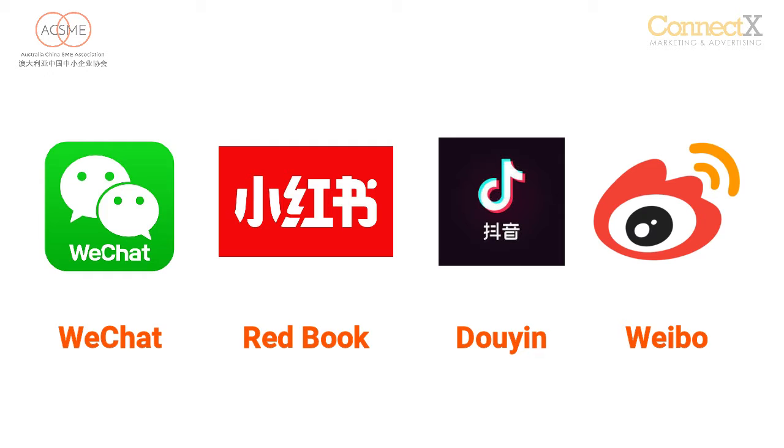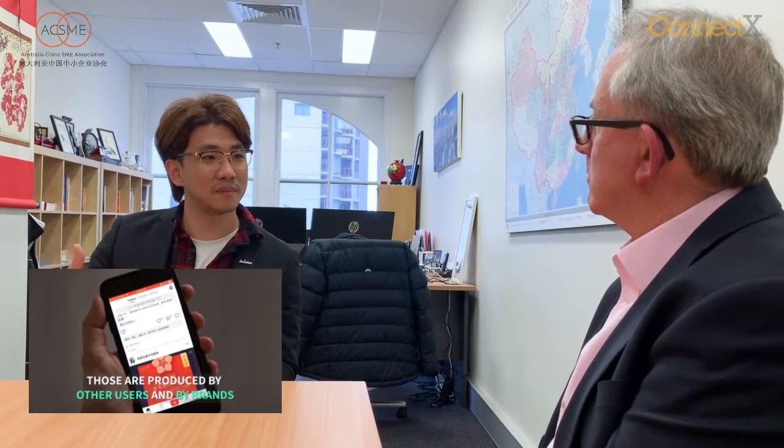And what sort of functions do they perform? Everyone knows WeChat, for example — how does WeChat fit in? WeChat is more like WhatsApp, so people use it as a daily communication tool. And there's Redbook, which is more like Instagram, so people will tend to read other people's reviews and see other people's experiences from Redbook.